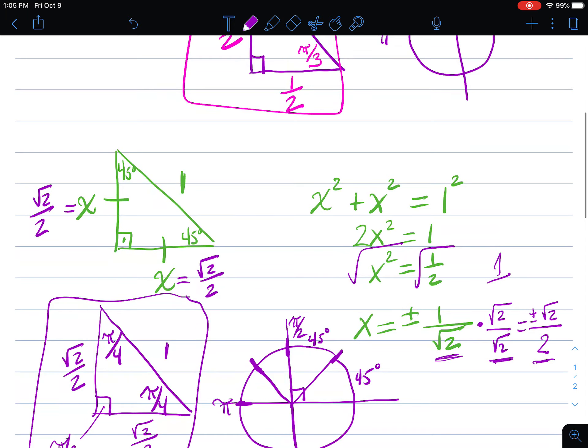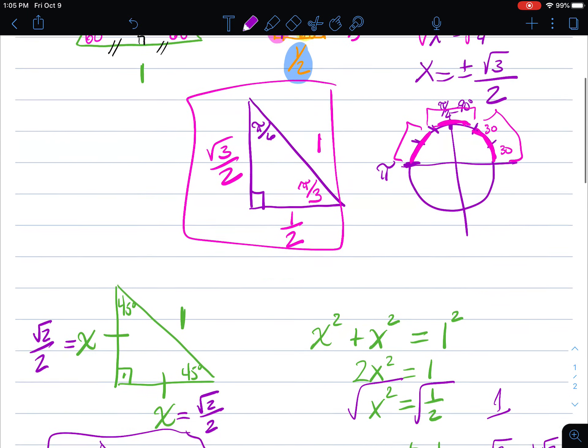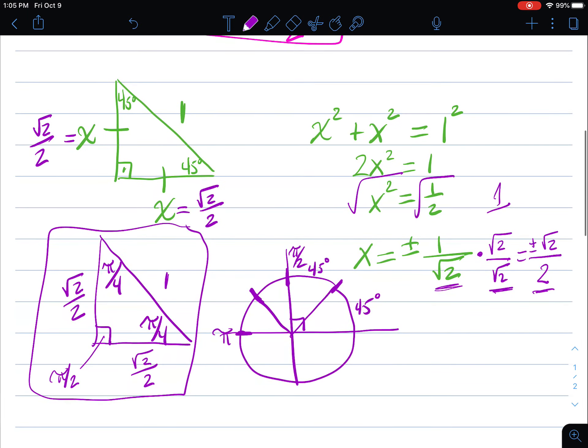Okay, so those are your two special right triangles. If you know both of these special right triangles you're going to be able to evaluate all the trig functions we're looking for currently in that unit.